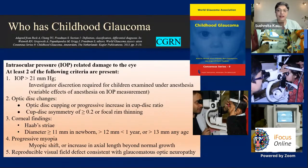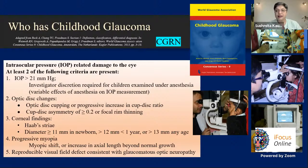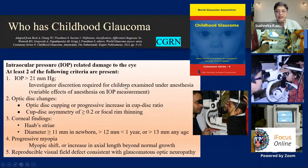We have to thank the Childhood Glaucoma Research Network (CGRN), an umbrella network of clinicians and allied medical professionals concerned with the management and follow-up of children with glaucoma. In the last decade, the CGRN has pushed the World Glaucoma Association to take note that a sizable number of children have glaucoma requiring focused attention. Consensus series 9 came out with guidelines as to who has childhood glaucoma and how to classify them uniformly worldwide.